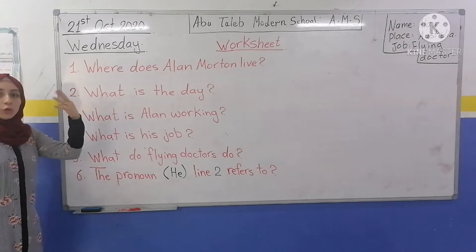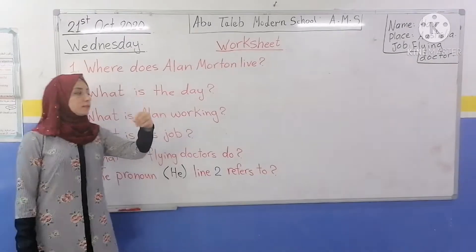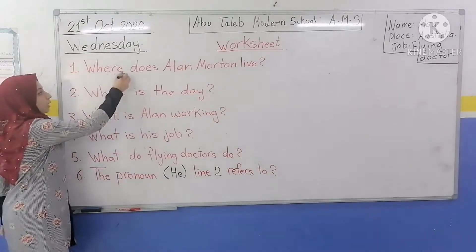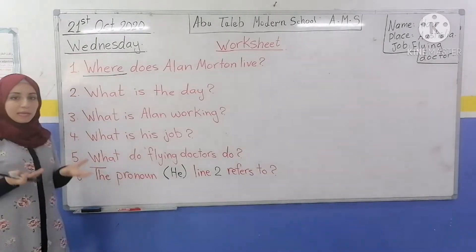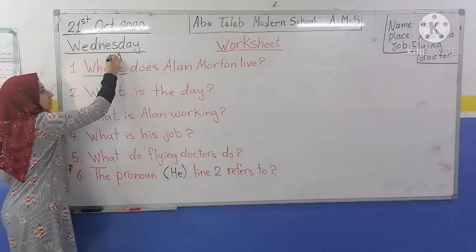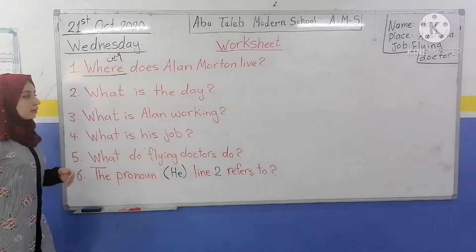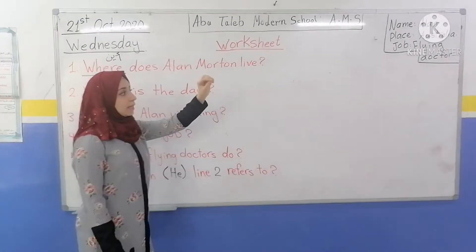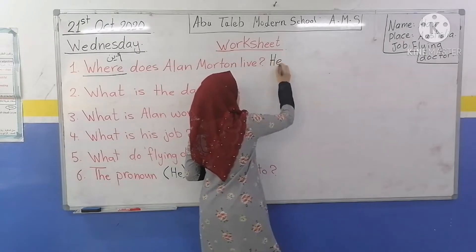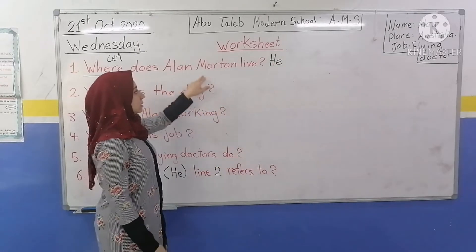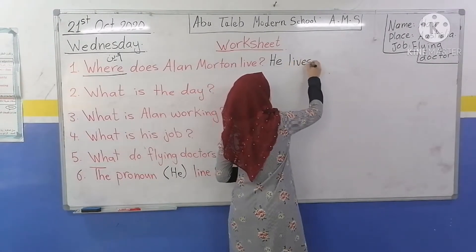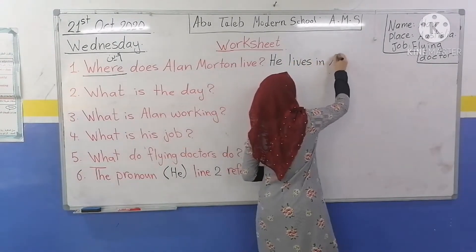Question number 1: Where does Alan Morton live? Where asks about the place. Alan Morton lives in Australia. Excellent. We can also say he lives in Australia, using 'he' instead of Alan Morton. He lives in Australia.